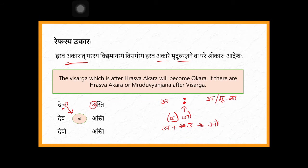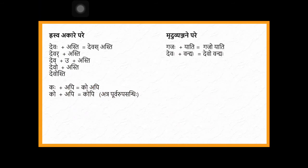Then you know what will happen: a + u will become 'o' by guna sandhi — like 'surya udaya'. The same way 'deva' and 'u' will become 'devo', then 'devo asti'. So 'deva asti' → visarga becomes 'u' → 'deva u asti' → a + u = o → 'devo asti'. There is a pururupa sandhi sign called avagraha — devo'sti.